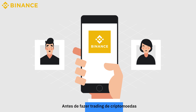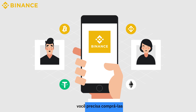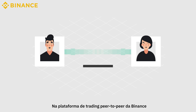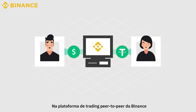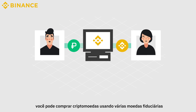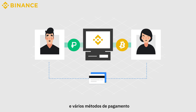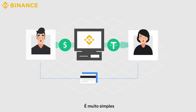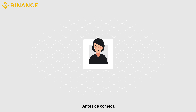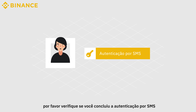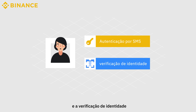Before trading cryptocurrencies, you need to buy cryptocurrencies first. On the Binance Peer-to-Peer Trading Platform, you can buy cryptocurrencies using multiple fiat currencies in various payment methods. It's super simple. Before we start, please make sure you have completed SMS authentication and identity verification.